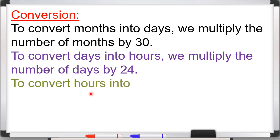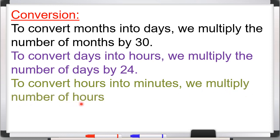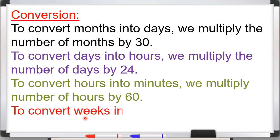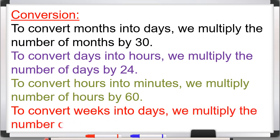To convert hours into minutes, we multiply the number of hours by 60. जब हम hour को minute में बदलते हैं, तो हम hour के number को 60 से multiply करते हैं। Because one hour is equal to 60 minutes. To convert weeks into days, जब हम weeks को days में convert करते हैं, we multiply the number of weeks by 7. उसको हम 7 से multiply करेंगे।